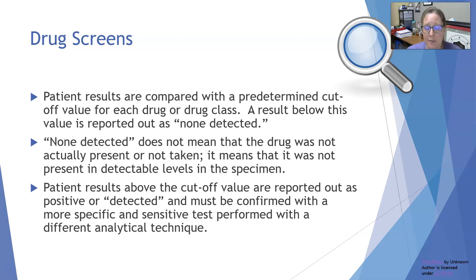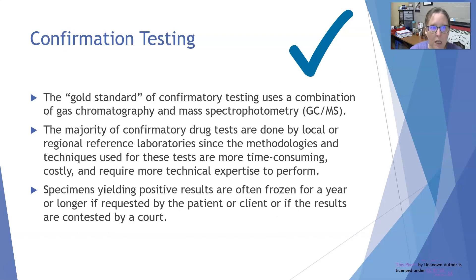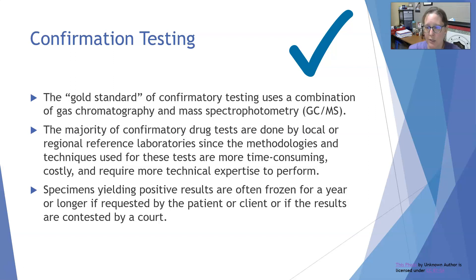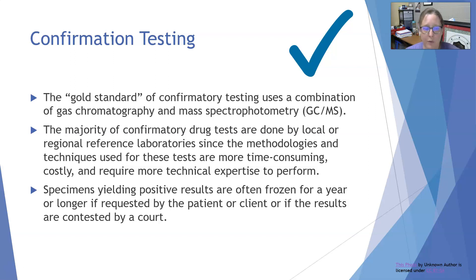If it's a medical screen with no legal ramification, screening is often enough, especially if it fits with the clinical picture. When there is a legal ramification and something triggered a positive on the initial screen test, confirmation testing is needed. The gold standard of confirmation testing is gas chromatography and mass spectrometry — GC-MS testing. GC-MS is usually done in reference labs, as your average hospital or clinic lab will not have GC-MS capacity. The majority of confirmatory drug testing is done by local or regional reference laboratories because GC-MS is more time-consuming, costly, and requires technical expertise. Specimens that yield positive results are often frozen for a year or longer if requested by the patient or if results are contested by a court.